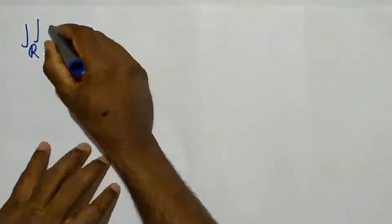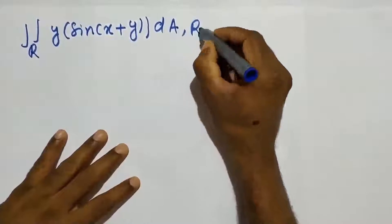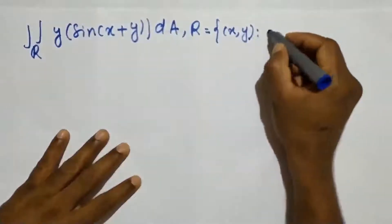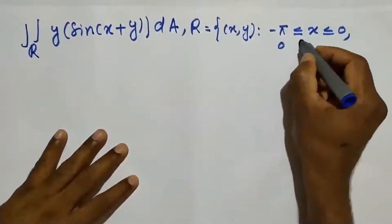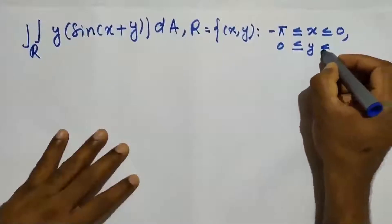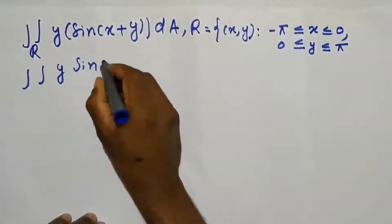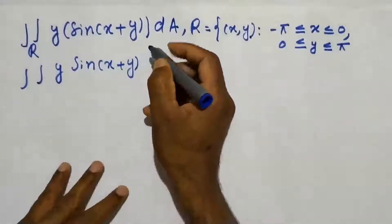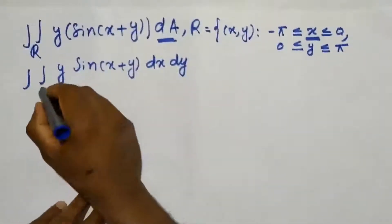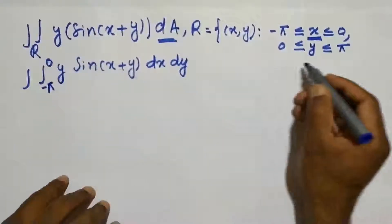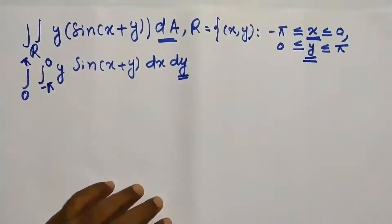The problem is: double integral of y·sin(x+y) dA, where the limit of x varies from minus pi to 0, and the limit of y varies from 0 to pi.